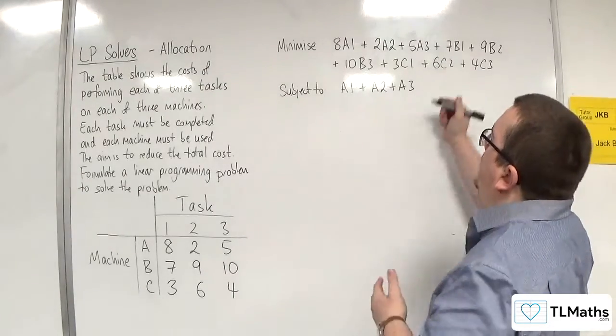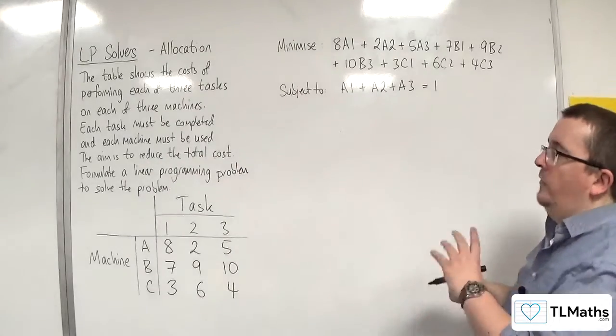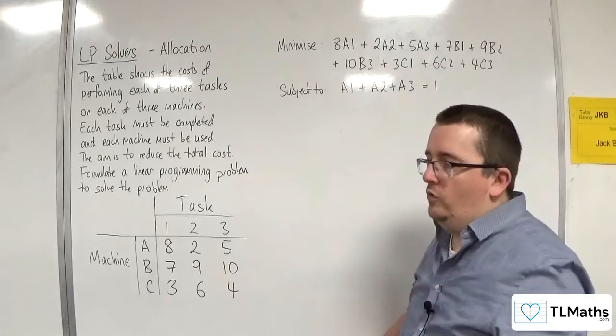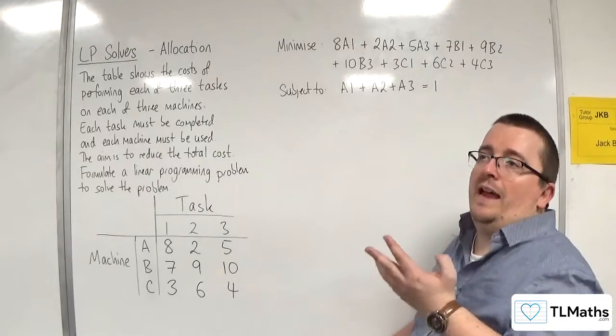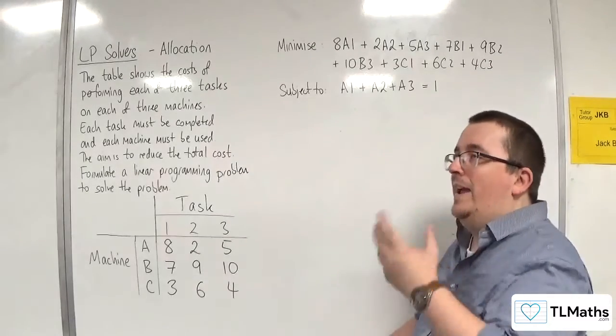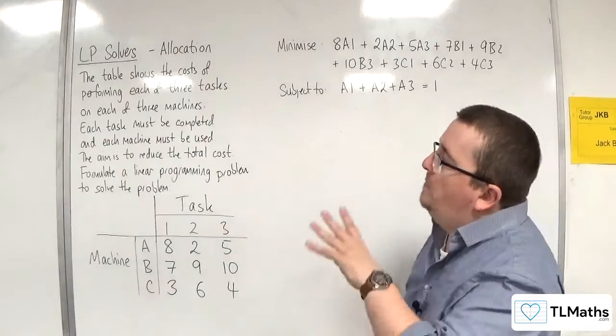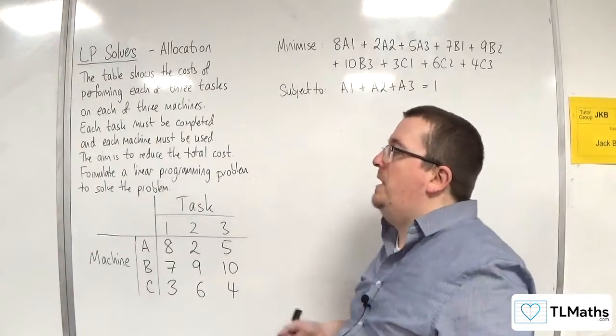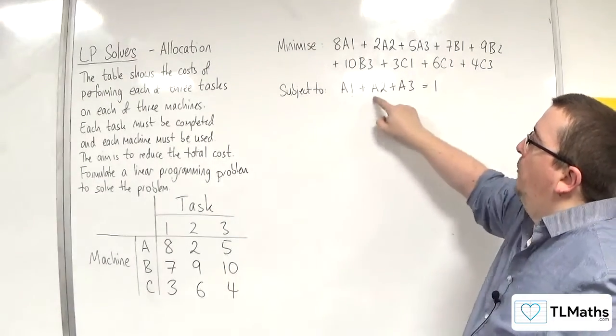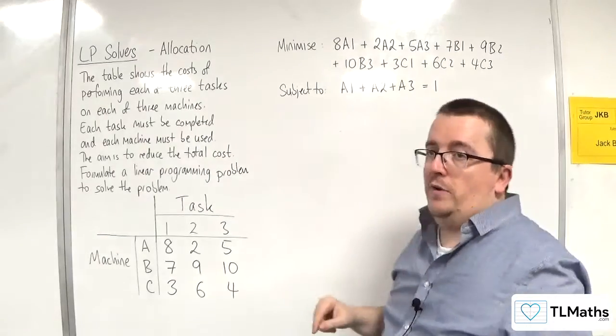So that has got to be equal to 1, because each machine must be used. So it's unlike the maximal matching situation that we had in the bipartite graph, where we did less than or equal to 1, because that person or activity may not actually be chosen. In this case, we've been told that each machine has to be used. So that's got to be equal to 1. So we're either going to have 1+0+0, 0+1+0, or 0+0+1, forcing A to do one of those three tasks.